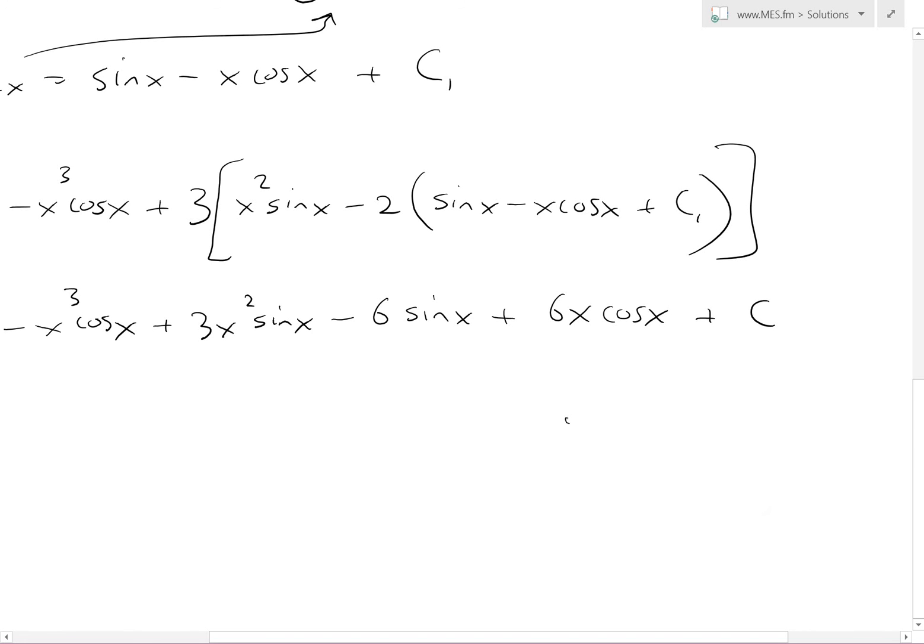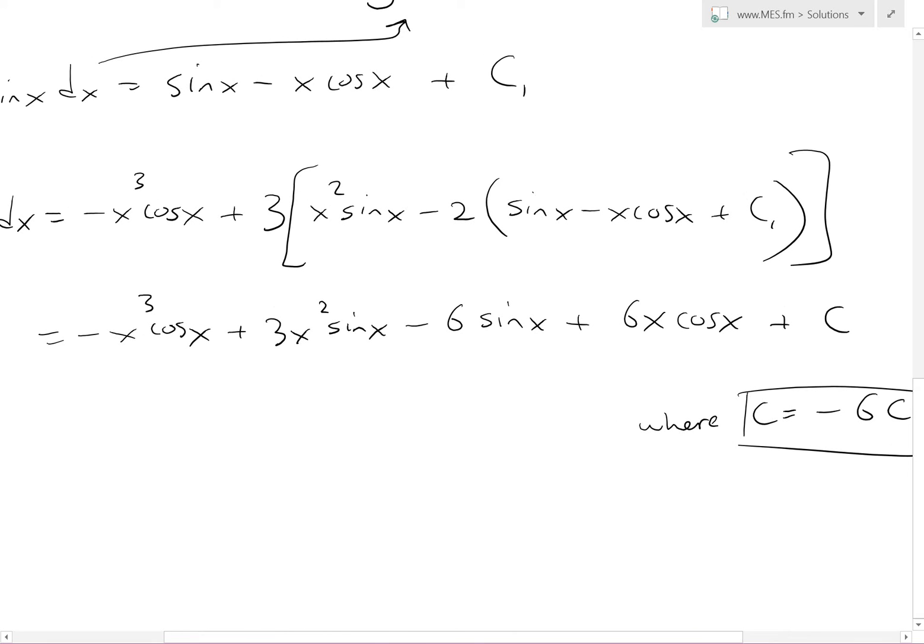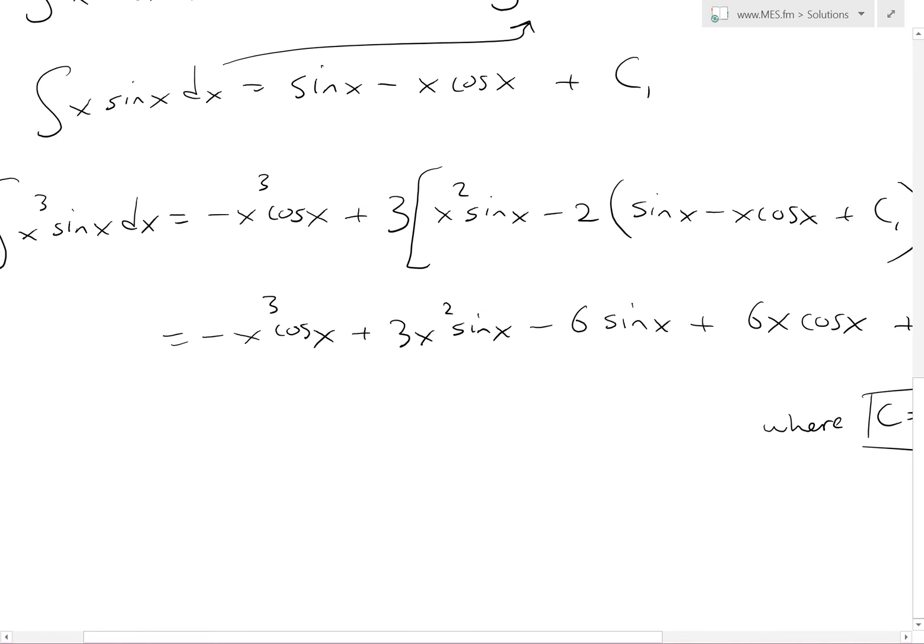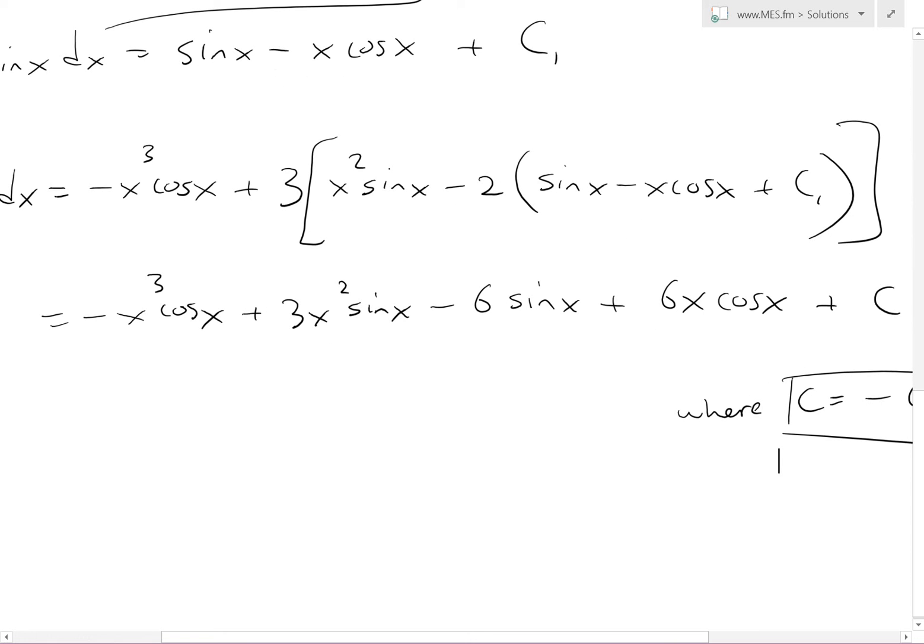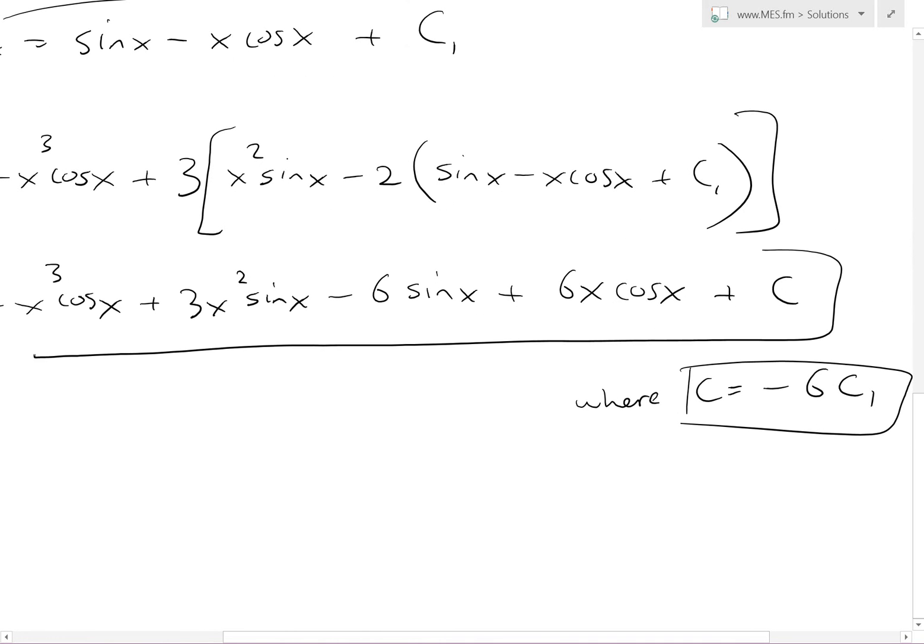And again, this is a constant regardless, so we'll just call this plus constant C, where basically C equals -6C₁. This is just for completion's sake, but it's all constant, so you can just leave it. This is pretty much our final answer. We could circle all of this like that. It's a pretty long answer, but that's it.